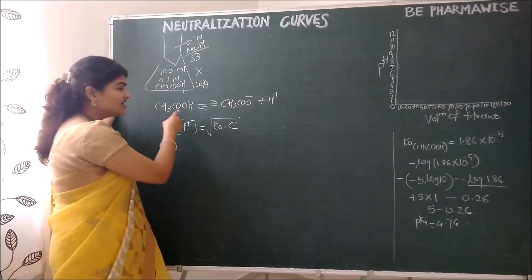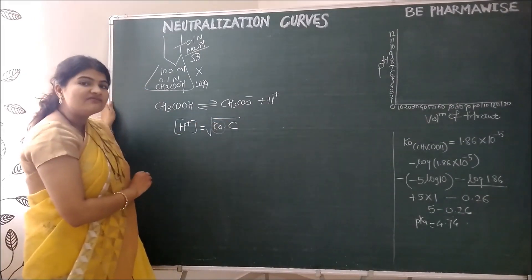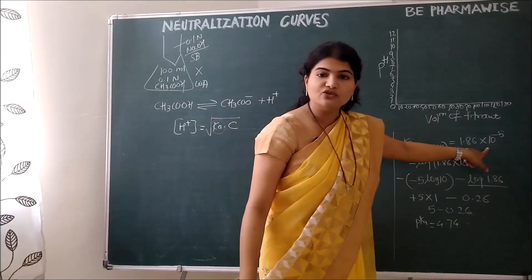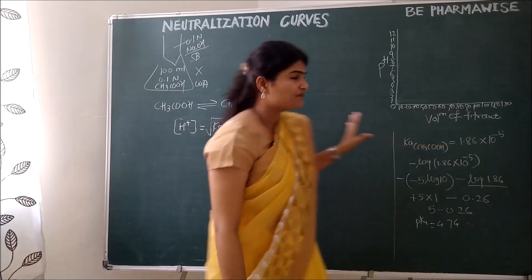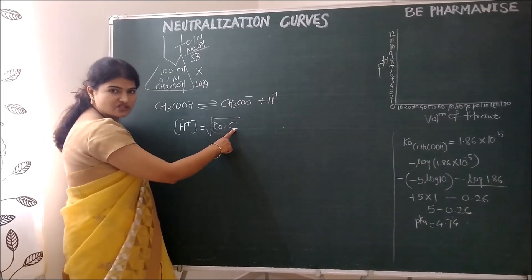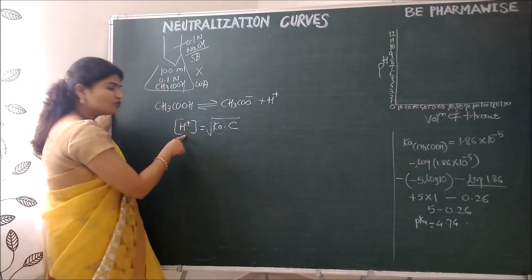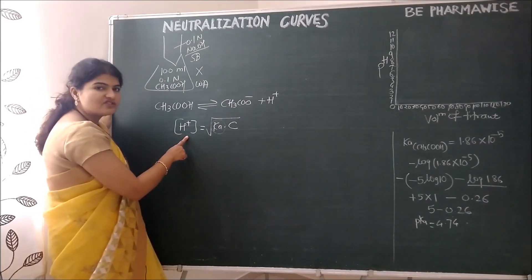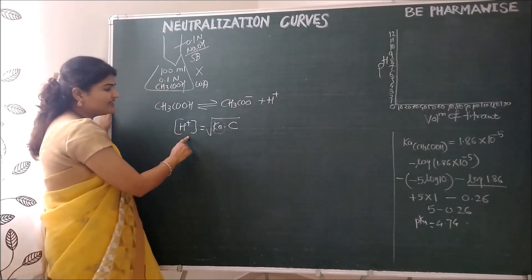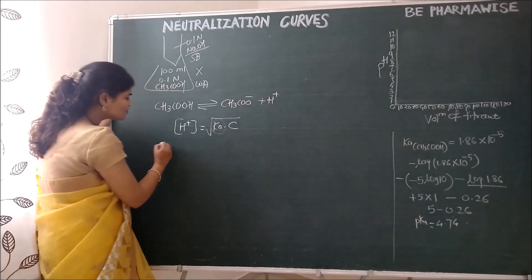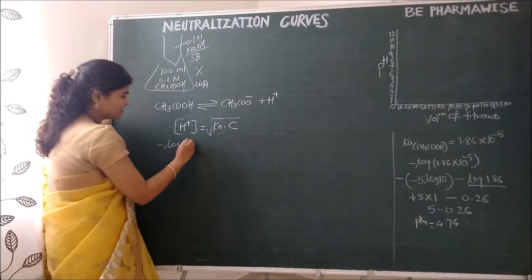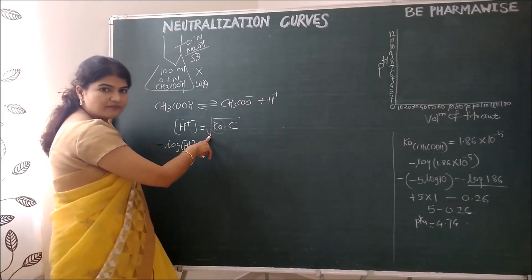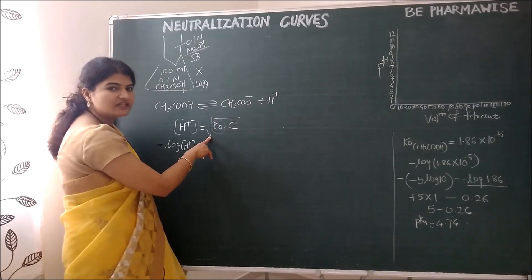Since it is a weak acid, it has a dissociation constant known as KA. The KA for acetic acid is 1.86 × 10⁻⁵. We know the concentration of acetic acid is 0.1 normal. We can calculate the H⁺ ion concentration, but first I will convert the formula to calculate pH by taking the negative log of each term. Whenever there is a square root sign, we use ½ when converting to log function.